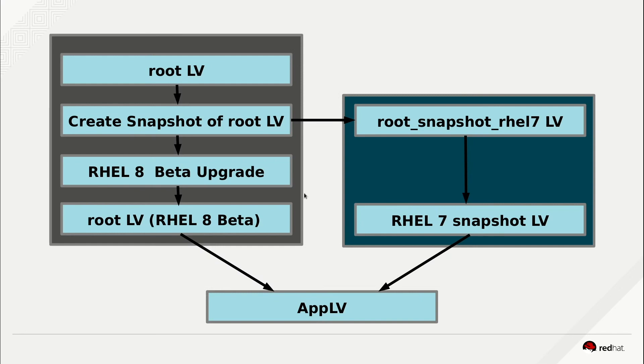And in the end, that's going to leave us with our root logical volume running RHEL 8 Beta. We'll also have the root snapshot RHEL 7 logical volume, which will be a bootable snapshot using the Boom Boot Manager. So in the end, we'll be able to boot to the Grub menu and either choose to boot off the root logical volume, which will boot us into RHEL 8 Beta, or we can choose to boot off the root snapshot RHEL 7 logical volume, which will boot us to the RHEL 7 environment.